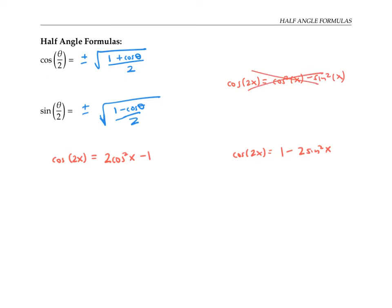I'm going to start with the first formula and make the substitution theta equals two x. That allows me to write cosine theta is two cosine squared theta over two minus one, since if theta is two x, then x is theta over two.